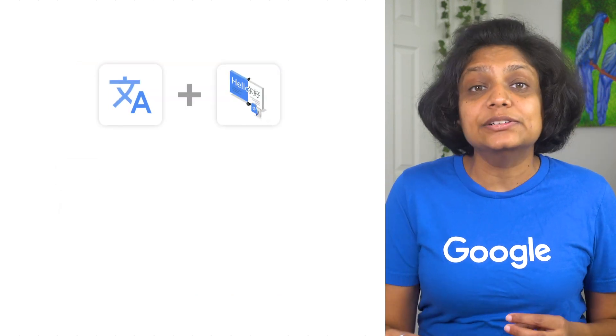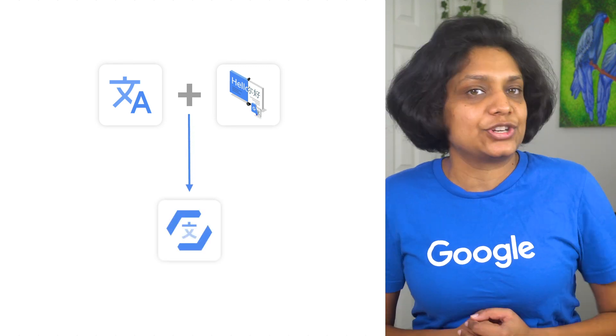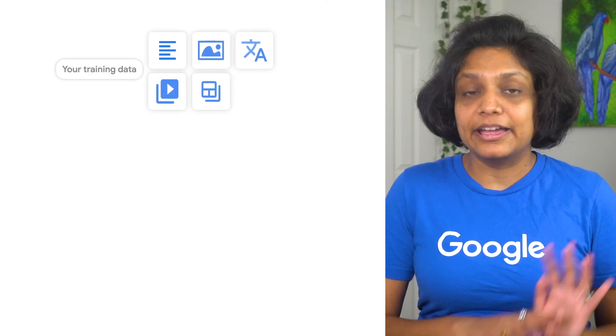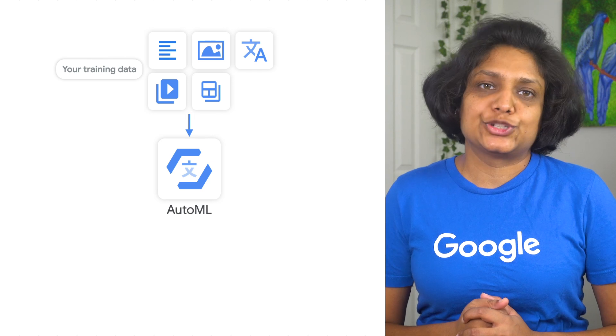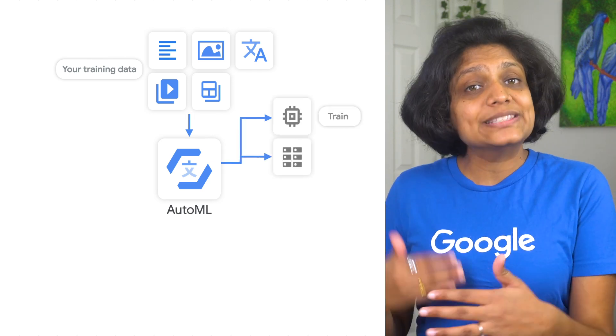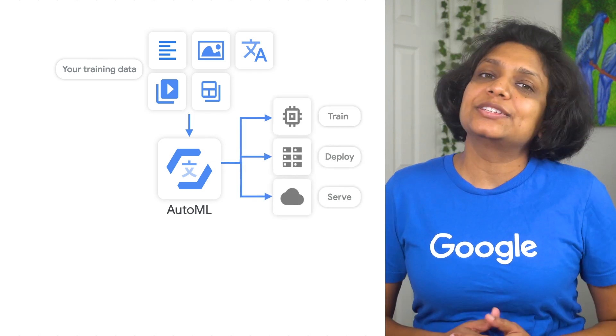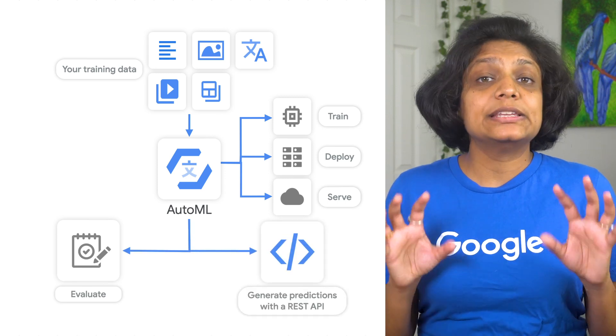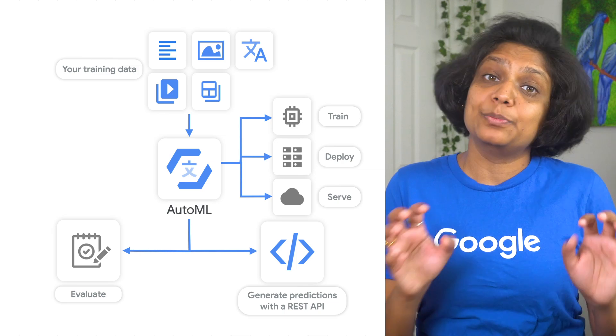What's amazing is AutoML's custom model is built on top of the generic Translation API model for domain-specific content that matters to you. Now, let's say you've established that you need a custom translation model. How would you create one? Well, we will just prepare and source the data and feed it into AutoML Translation. It then trains, deploys, and serves the model and provides us with an easy interface to evaluate and test it. It creates an easy-to-use REST API to make predictions.